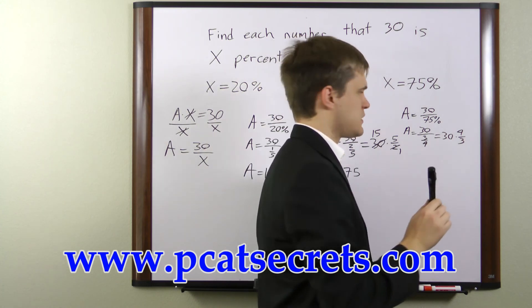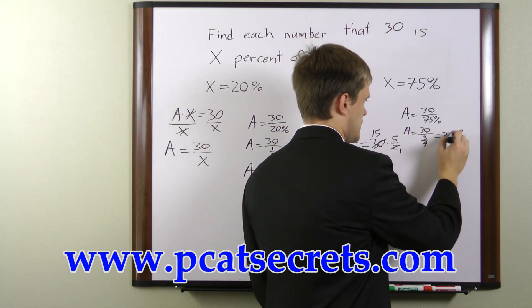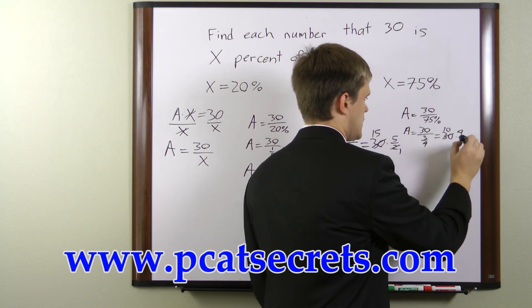So we can write that a equals 30 over 3 fourths or 30 times 4 over 3. Once again, we can cancel. We'll divide 30 by 3 to get 10 and 3 by 3 to get 1.